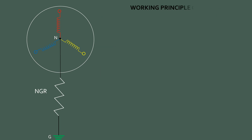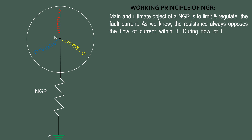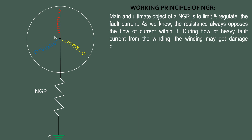Working Principle of NGR: The main and ultimate object of NGR is to limit and regulate the fault current. As we know, resistance always opposes the flow of current through it. During flow of heavy fault current from the winding, the winding may get damaged because protection relays need a minimum time to isolate the power system.